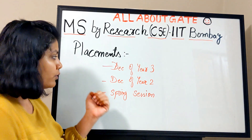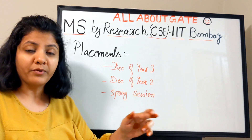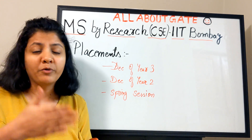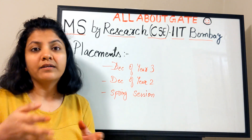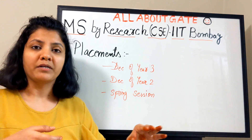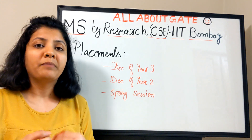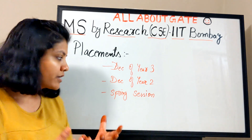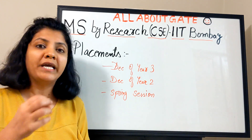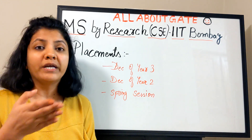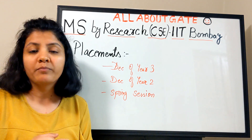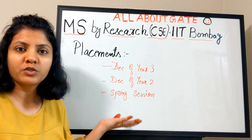A student who graduates early is allowed to sit for placements in December of year two. However, most outstanding students who finish within 1.5 to 2 years tend to complete their work after the December placement window, missing it. For this reason, IIT Bombay is discussing a special spring placement session for PhD and MS graduates, planning to invite top research labs and companies.